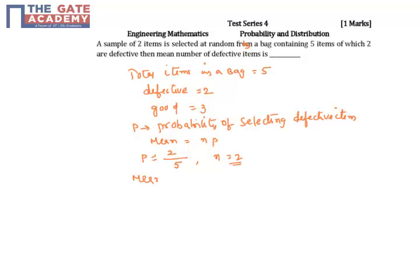Mean is equal to 2 into 2 by 5. That is nothing but 4 by 5, which is equal to 0.8.